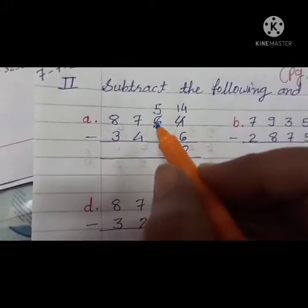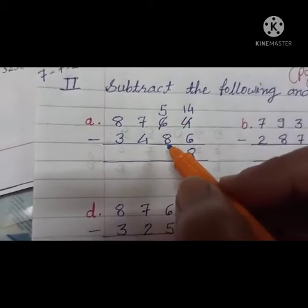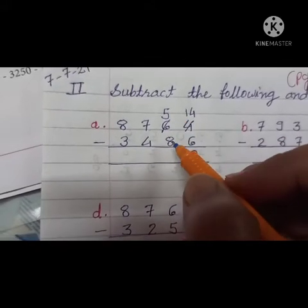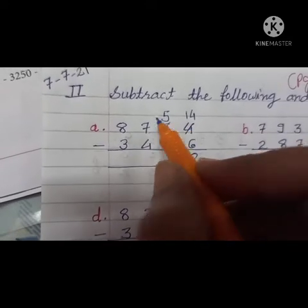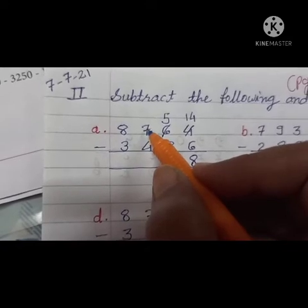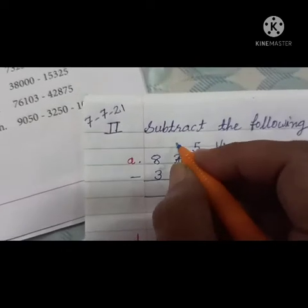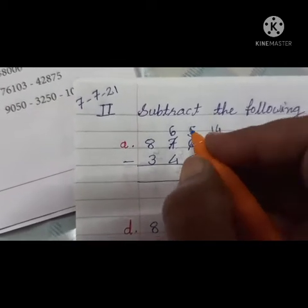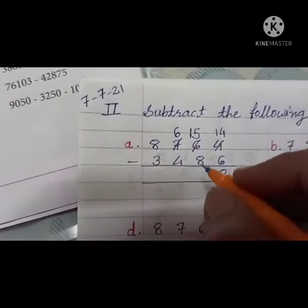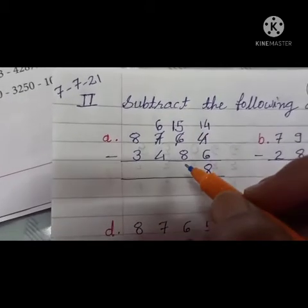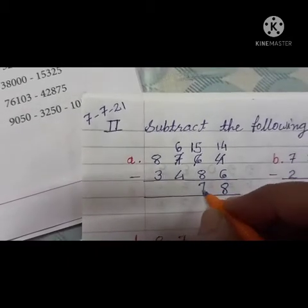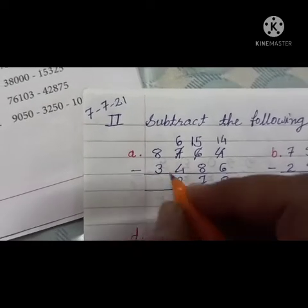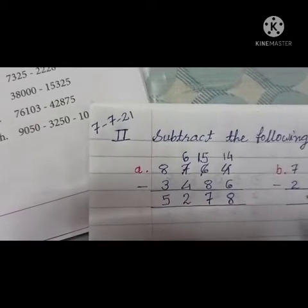Now subtract the next number, 10's. 5 minus 8. But again, we cannot subtract 8 from 5 because 8 is larger than 5. So we will borrow from next number, 700's. So now 7 becomes 6 and 5 becomes 15. Now 15 minus 8, 15 minus 8 is equal to 7. 6 minus 4, very simple, 2. 8 minus 3, 5.